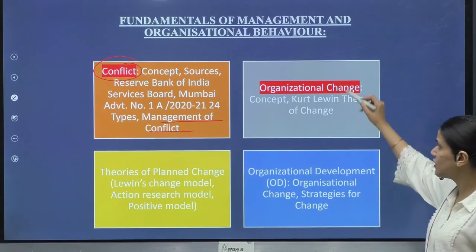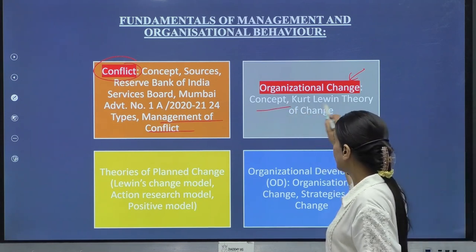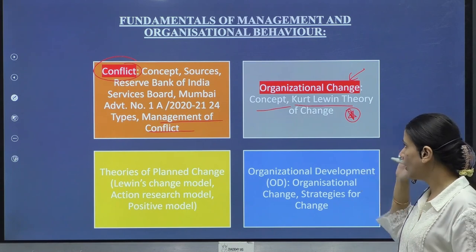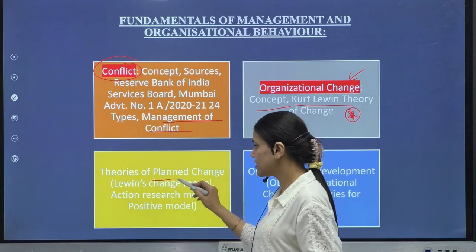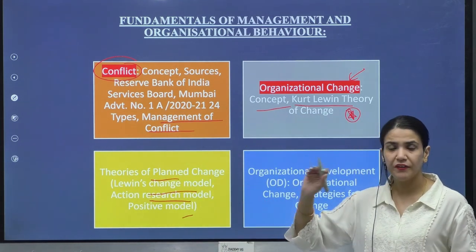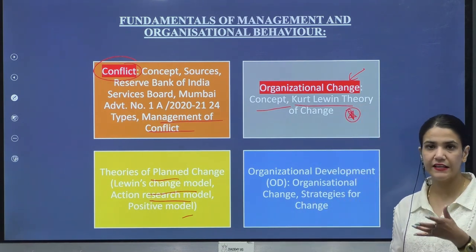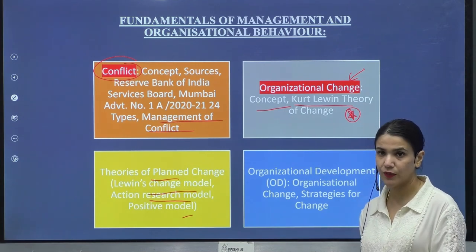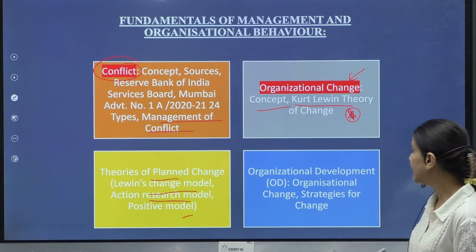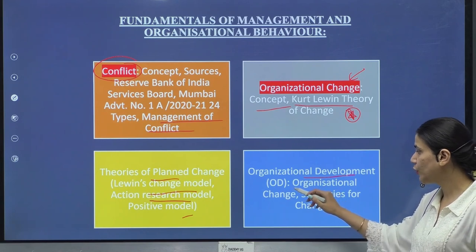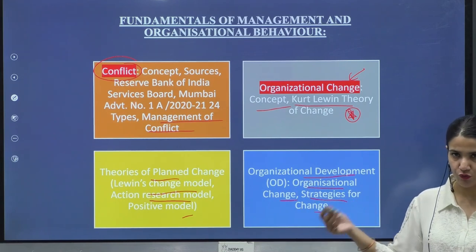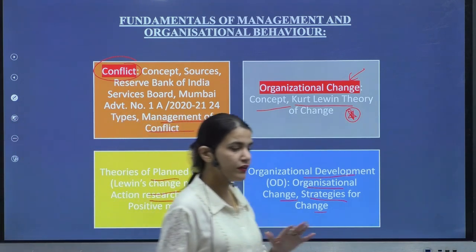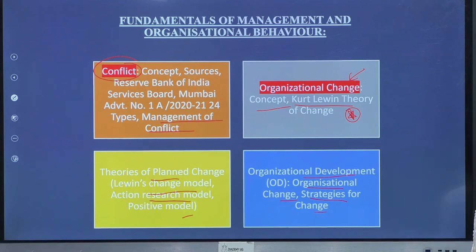Then you are going to be studying about organizational change — it's a very important topic where you will be studying about the concept and the Kurt Lewin theory, which is very, very important. As a management student, you can always expect certain questions from the Kurt Lewin theory. There are also theories of planned change — Lewin's change model, action research model, and positive model. You just need to know the models, and when you are revising again and again and practicing enough objective and subjective questions, this is going to be very significantly helpful. Then under OB, there is organizational development, where you will be talking about organizational change, strategies for change, and so forth. The topics are very easy and the syllabus is very confined — it is not at all lengthy, and you can easily cover it in the coming days.